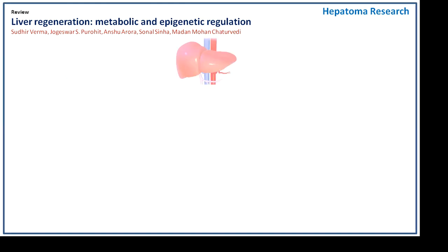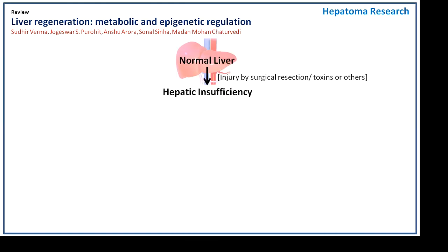Whenever there is an injury to the liver, either because of surgical intervention or toxins, the resulting hepatic insufficiency displays various metabolic alterations, as metabolism is one of the primary functions of the liver.